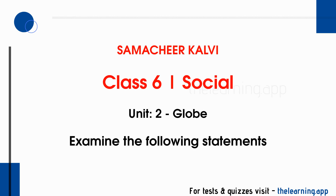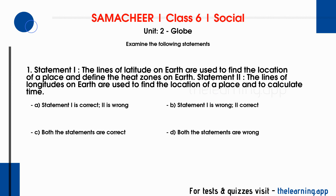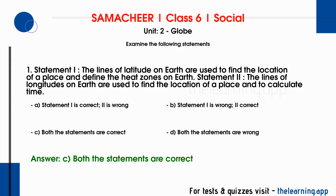Examine the following statements. Question 1: Statement I — The lines of latitude on Earth are used to find the location of a place and define the heat zones on Earth. Statement 2 — The lines of longitudes on Earth are used to find the location of a place and to calculate time. Options are A. Statement I is correct, 2 is wrong. B. Statement I is wrong, 2 correct. C. Both the statements are correct. D. Both the statements are wrong. Correct answer is C. Both the statements are correct.